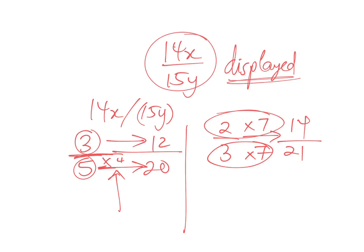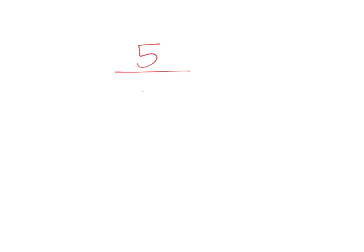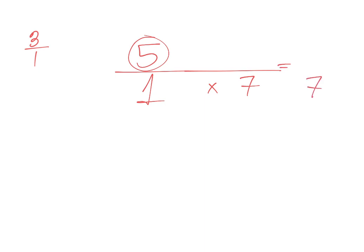Example 7: express 5 as an equivalent fraction having denominator 7. Keep in mind that 5 is essentially 5/1. To make the denominator 7, multiply by 7. Whatever you do to the denominator, you must do to the numerator — so 5×7 = 35, giving 35/7.